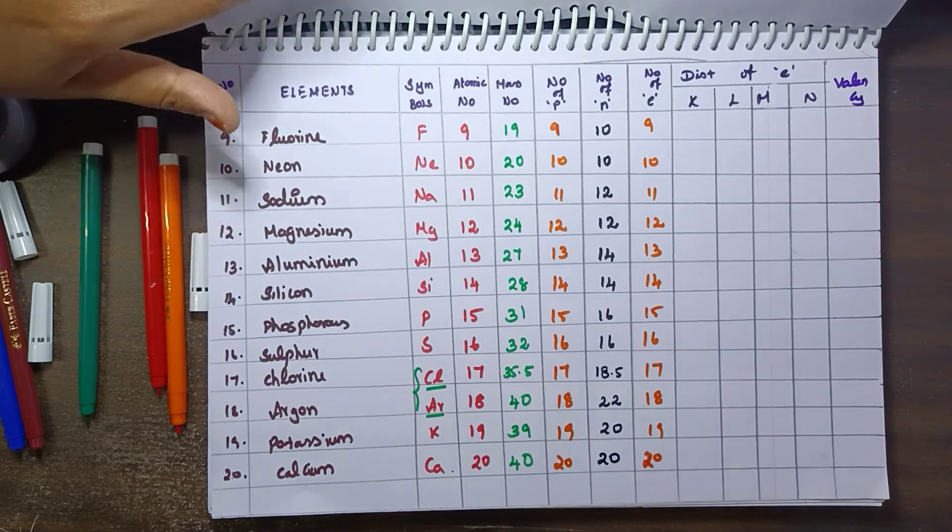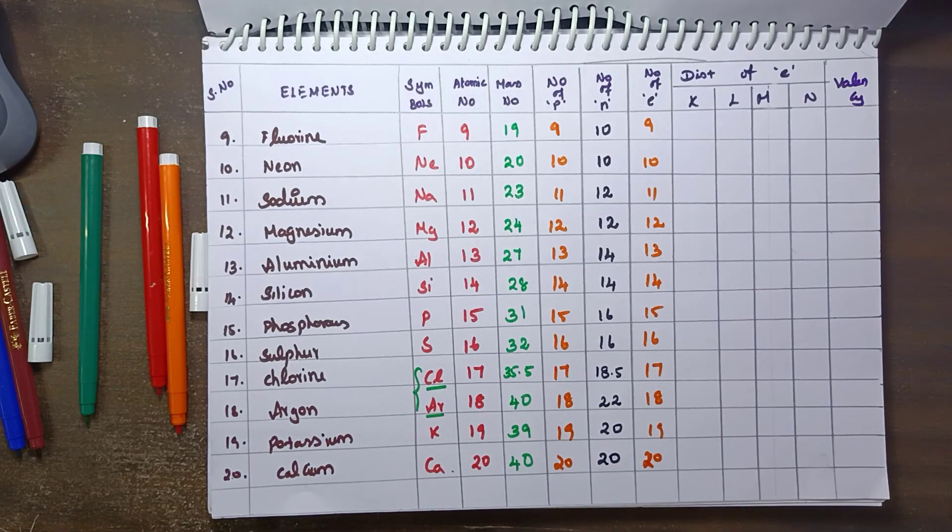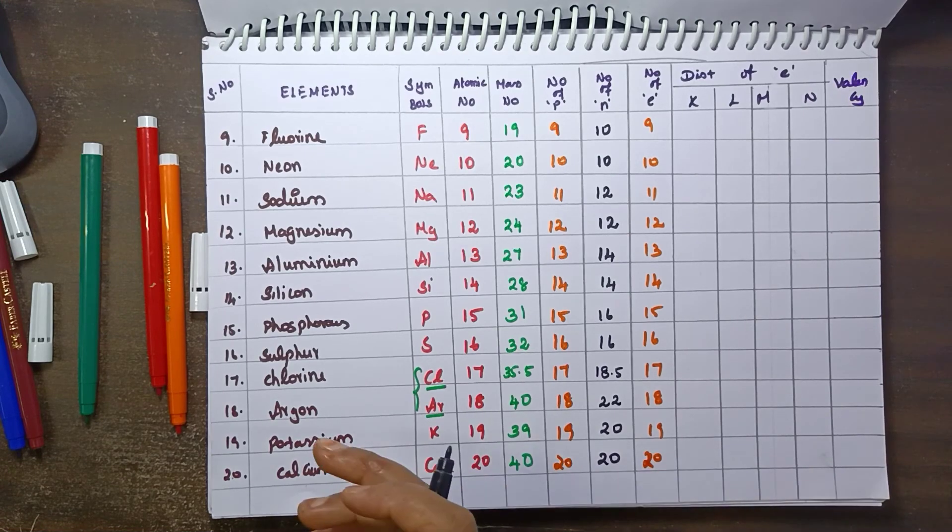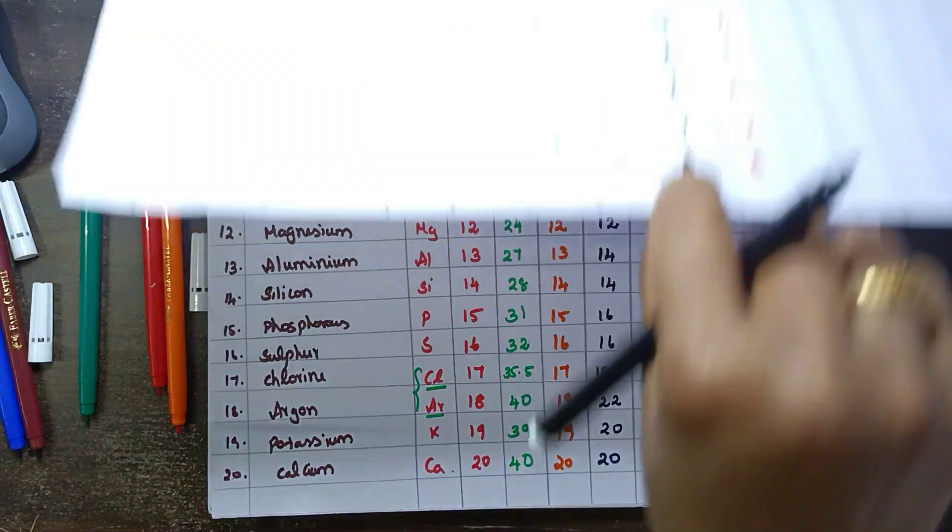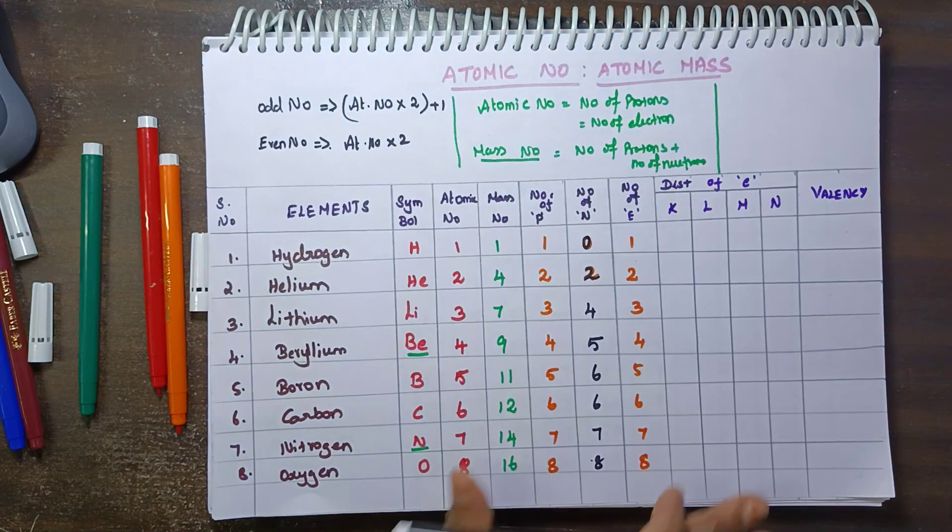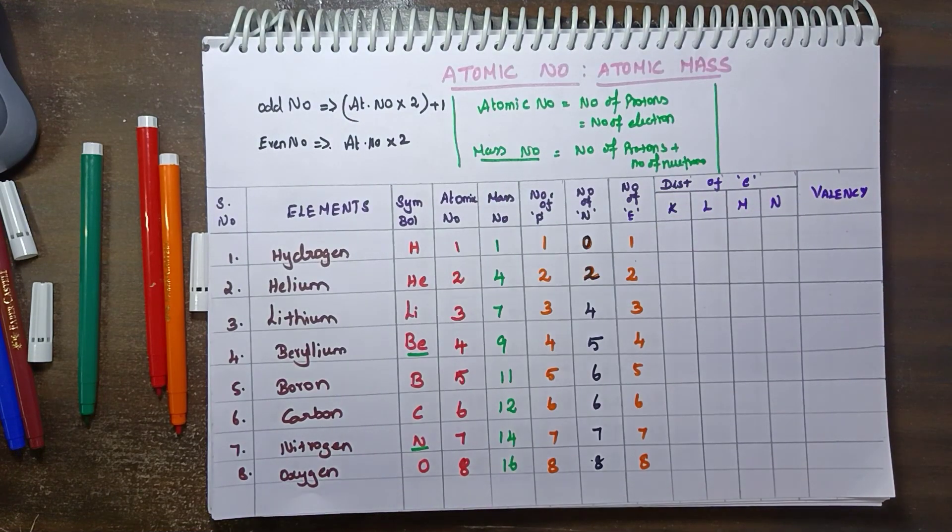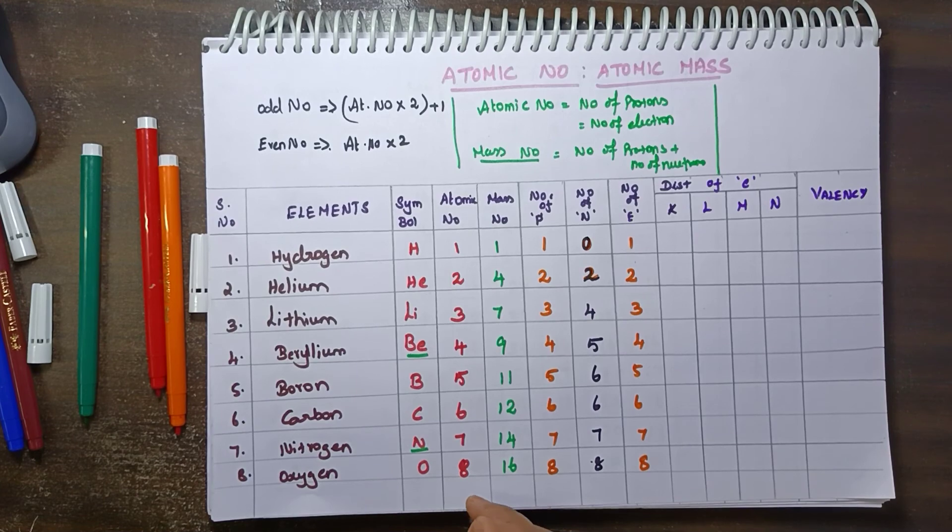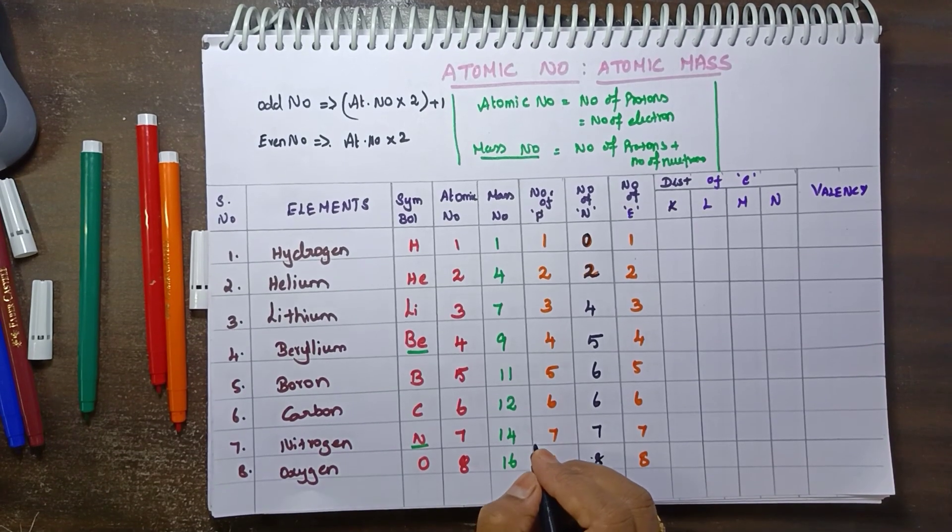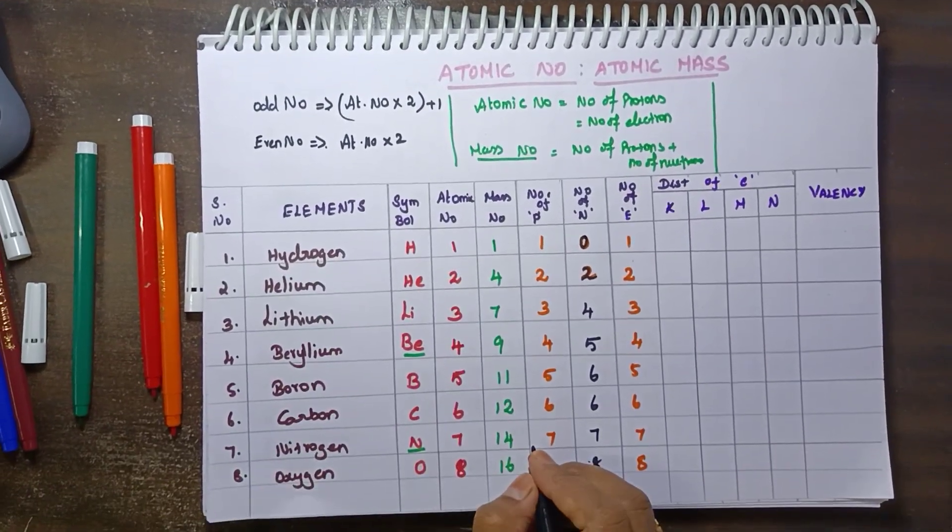So first one, periodic table column you can learn here. 9th standard NCERT textbook you can get, so you can do it. This is a continuation video. Next one, number of shell arrangement. Thank you.